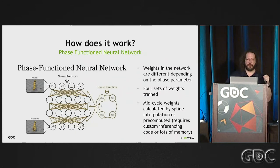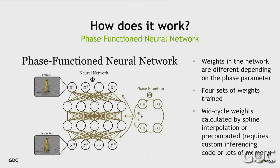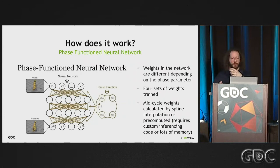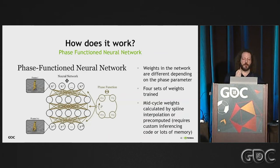One thing that's very different about this phase-functioned neural network is that the weights are actually variable. Most networks have fixed weights after training. With PFNN, you effectively train four different networks — one for each quarter of the walk cycle. Based on the phase the character is in, weights are automatically varied. There are a few ways to calculate those weights: pre-compute a wide set for many phases, or do a spline interpolation at runtime, though that requires additional computing.